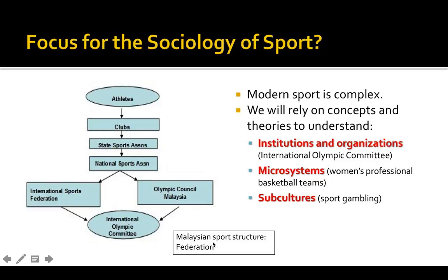Let's think about another focus area of the sociology of sport — how sport is physically and logistically organized. We know modern sport is much more complex than it has been in previous decades or centuries. To really flesh out that structure, sociology of sport provides focus through three different areas for understanding how sport is organized: institutions and organizations, micro-systems, and subcultures.